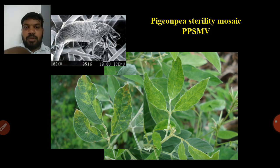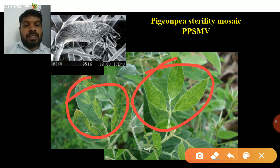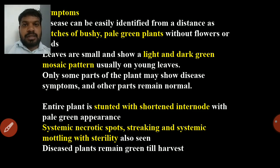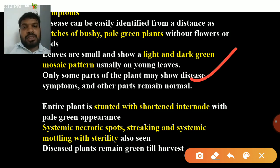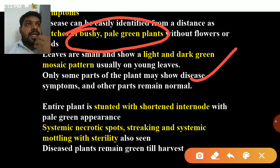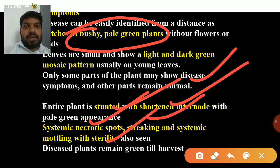PGNP sterility mosaic is caused by PGNP sterility mosaic virus. It produces pale green to dark green color patches on leaves. Infected plants produce bushy pale green plants with stunted growth and shortened internodes. There is systemic necrotic spotting, streaking, systemic mottling, and sterility — the flowers are sterile.